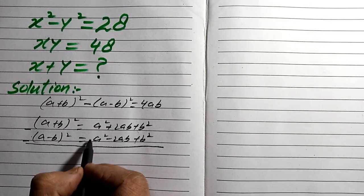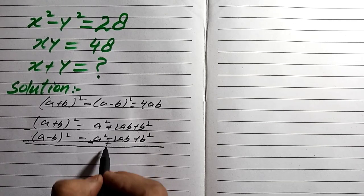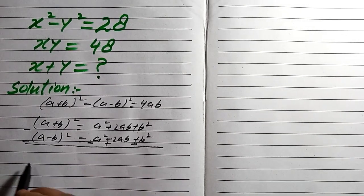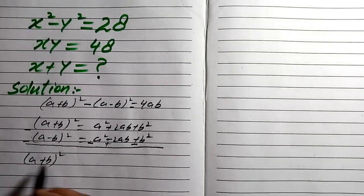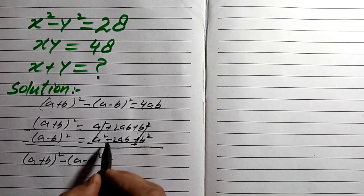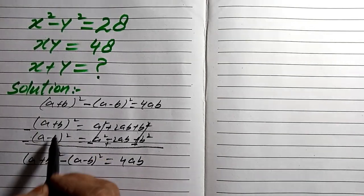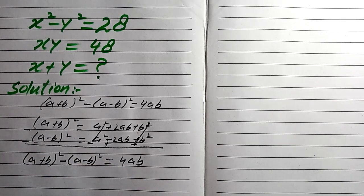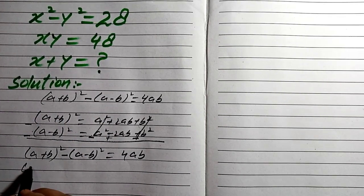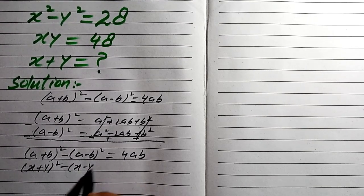When we subtract, the plus signs become minus and the minus signs become positive, so the a² and b² terms cancel, and we get 4ab. So (a+b)² minus (a-b)² equals 4ab. We now apply this formula with a equal to x and b equal to y.